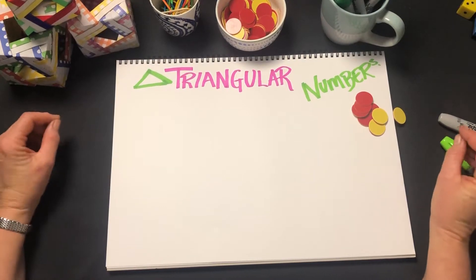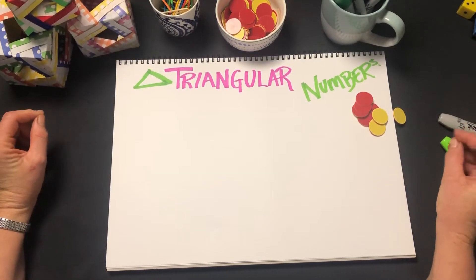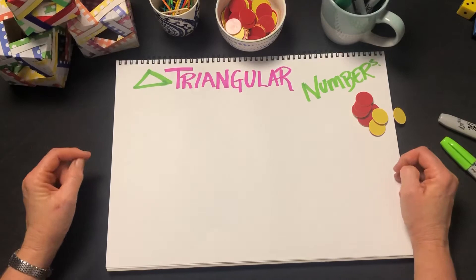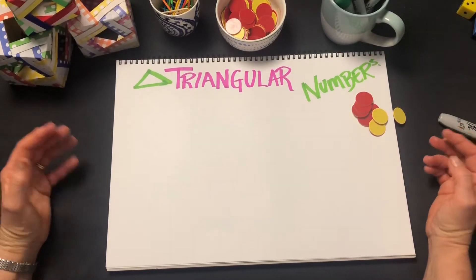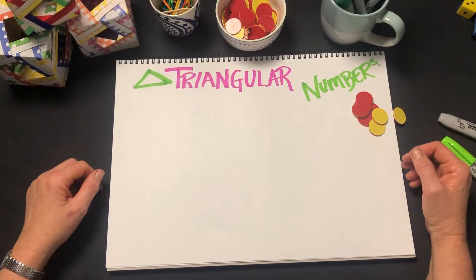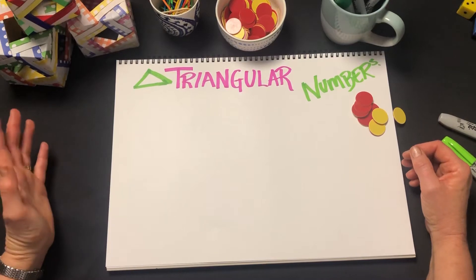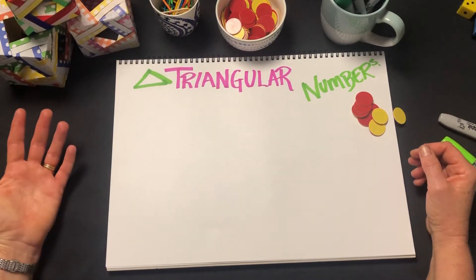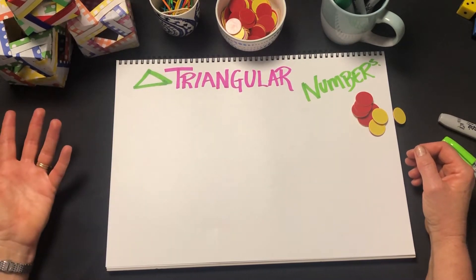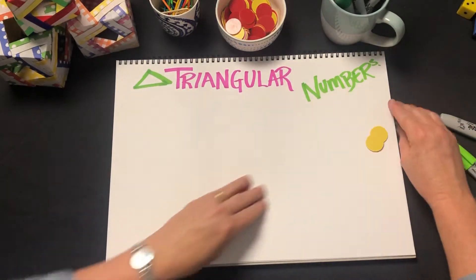Just like a square number was defined as the number of counters we need to form a square, the same goes for triangular numbers. If we can form a triangle with that number, then it's a triangular number. Let me show you what I mean.